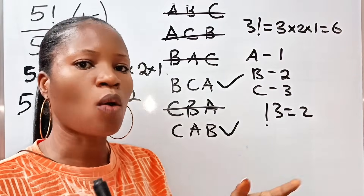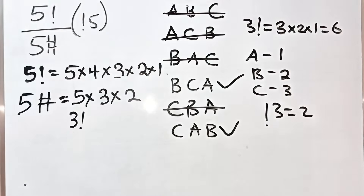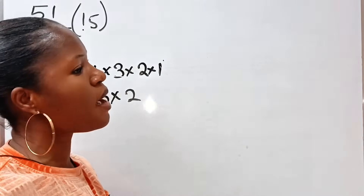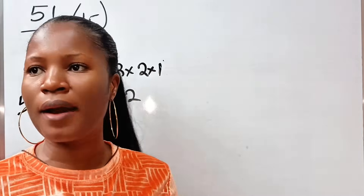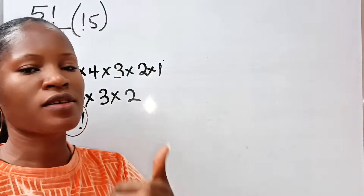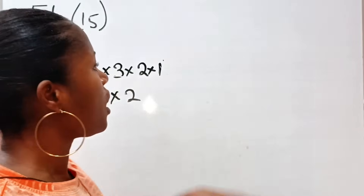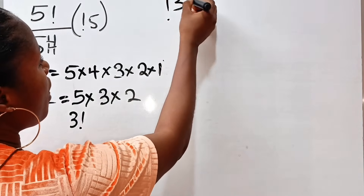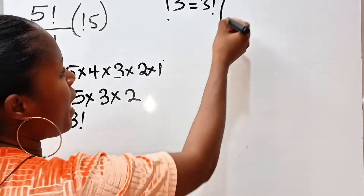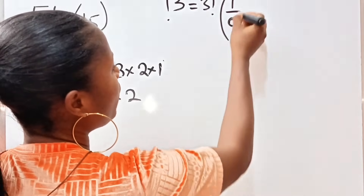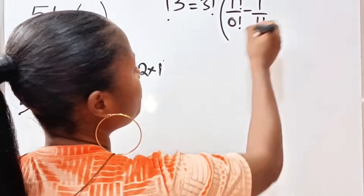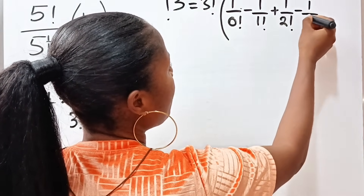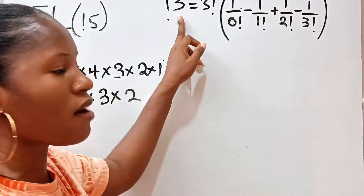So 3 sub-factorial is equal to 2. There must be a formula we can use to find this. Let us bring the formula to the board. 3 sub-factorial is equal to 3 factorial multiplied by the series: 1 over 0 factorial, minus 1 over 1 factorial, plus 1 over 2 factorial, minus 1 over 3 factorial. We stop at 3 factorial because we have 3 sub-factorial.